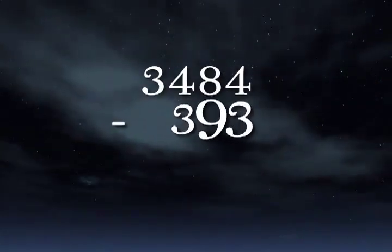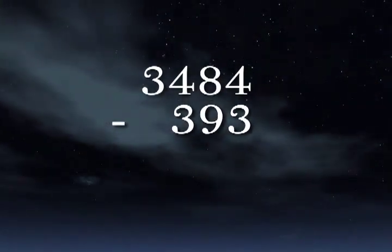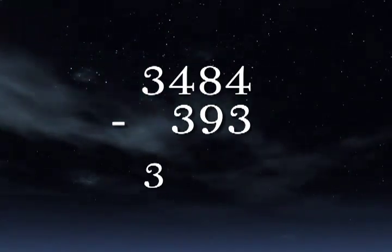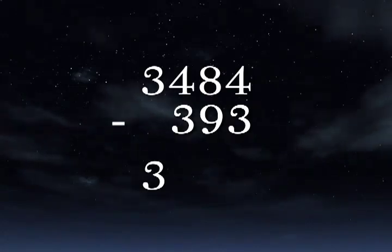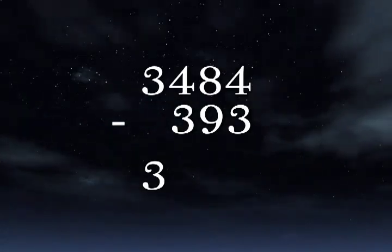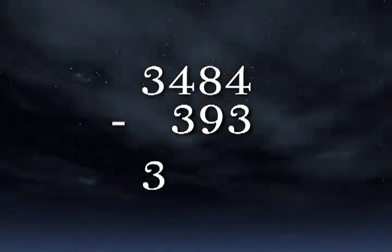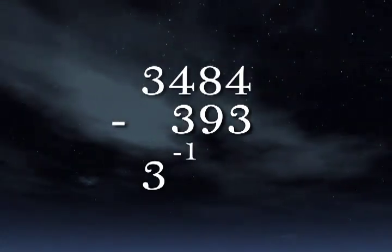Here's that same problem again to illustrate borrowing from left to right. First, bring down the 3. On the next column, 4 minus 3 is 1, but we know that the column to the right is borrowing a 1. In order to indicate the borrowing, we write a negative 1 above the answer in this column.